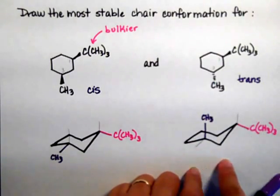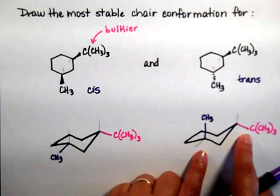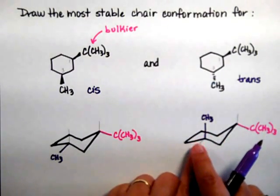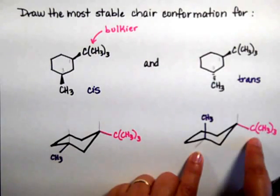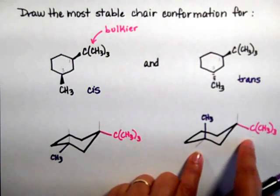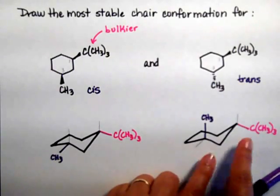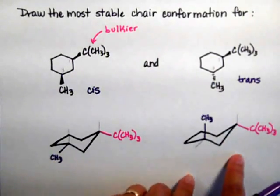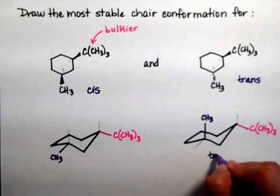If you were to flip this chair, that equatorial tert-butyl would go to axial, and that's really bad. The methyl would go equatorial, but that doesn't help, because the biggest group goes axial when you flip the chair — and that is worse. So this arrangement is the lowest energy, most stable conformation for the trans isomer.